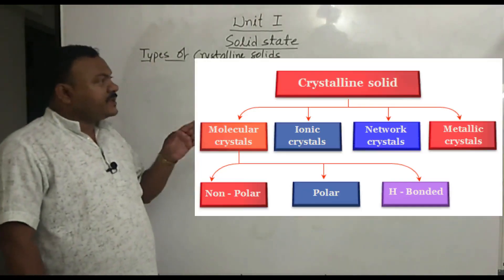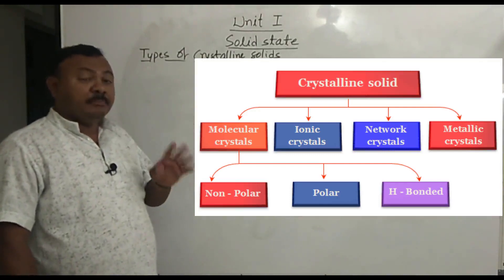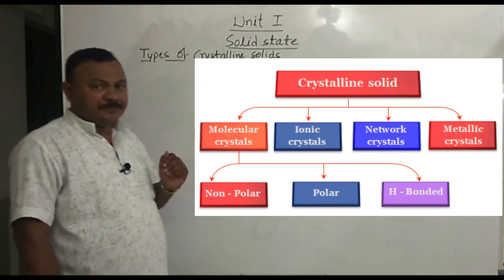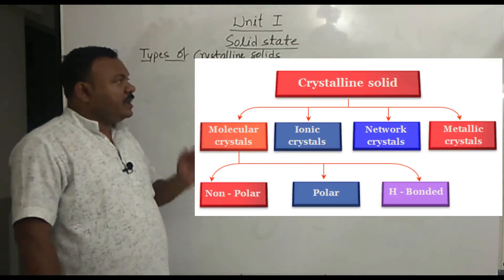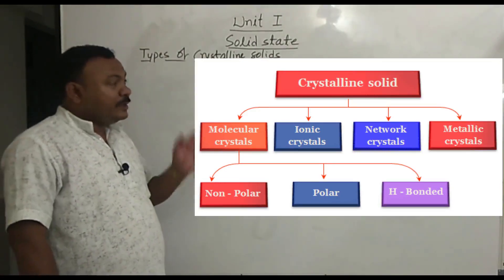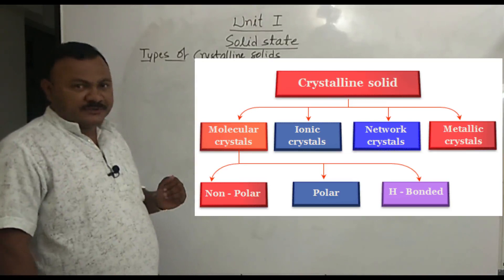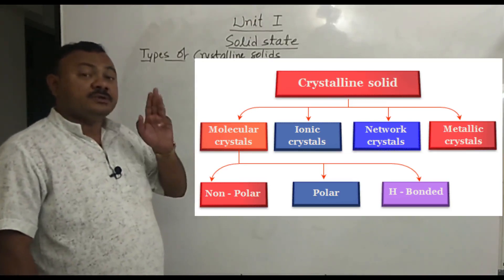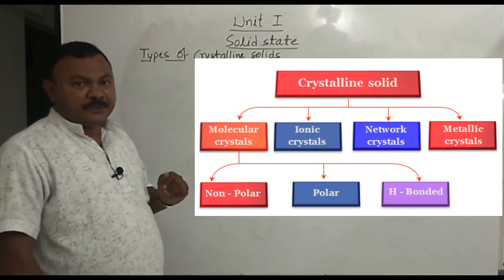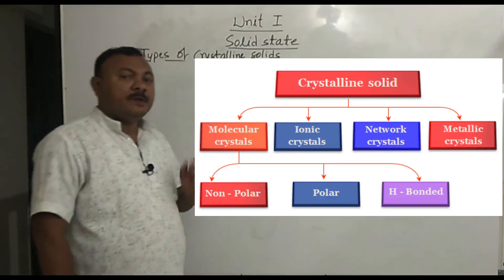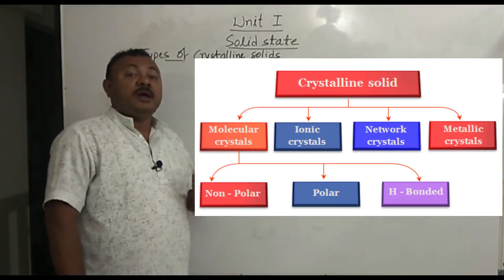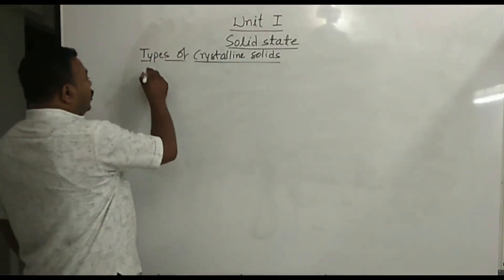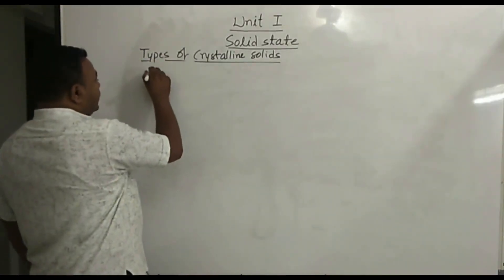We divide crystalline solids into four types based on the particles that build them: molecular solids, ionic solids, covalent or network solids, and metallic solids. Molecular solids are further divided into three types: non-polar molecular solids, polar molecular solids, and hydrogen bonded molecular solids. We will concentrate on all these crystalline solids one by one.